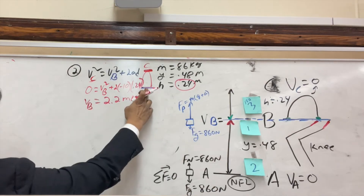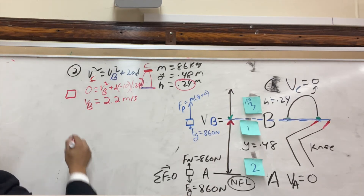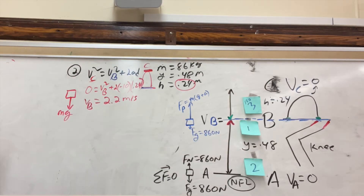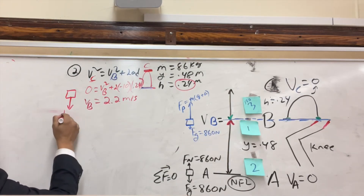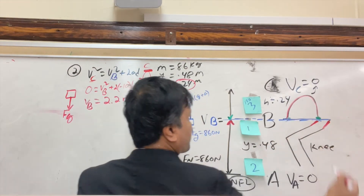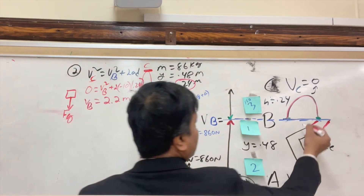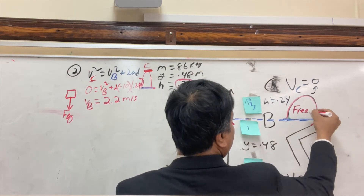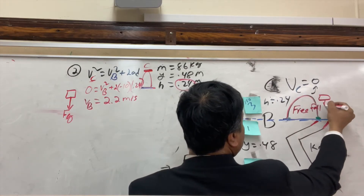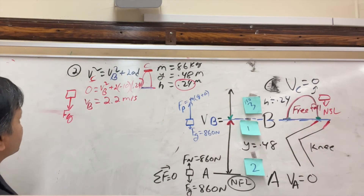Now we draw the free body diagram for the airborne phase. Only one force acts — gravity (mg or Fg) — because you are in free fall. This is Newton's second law applied to free fall.